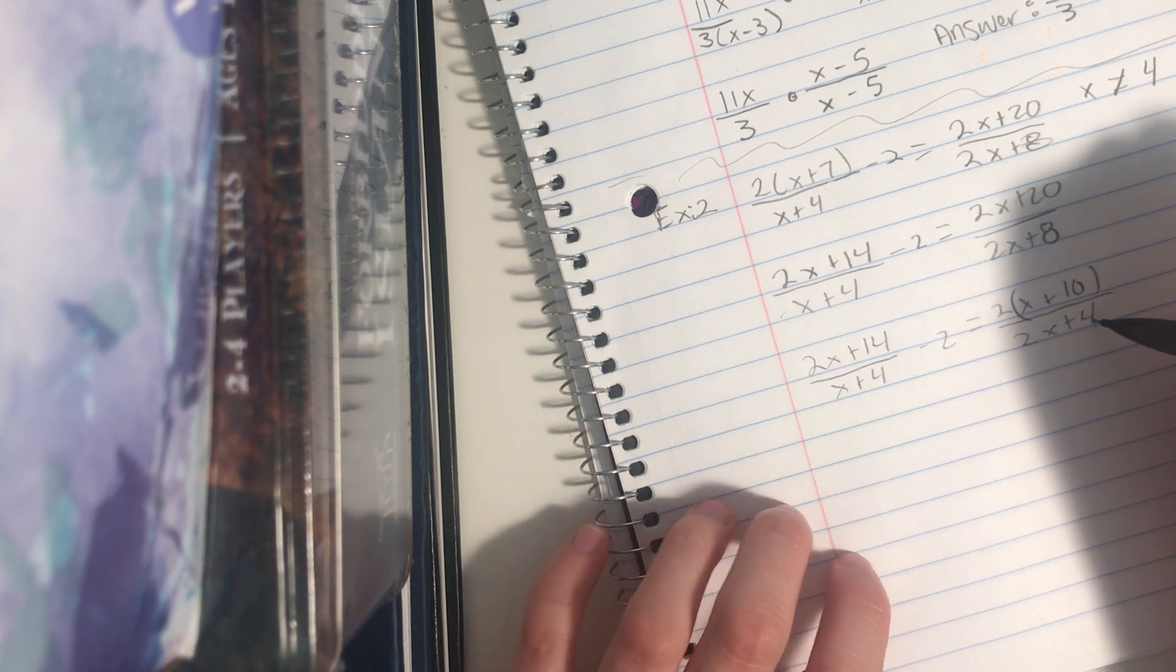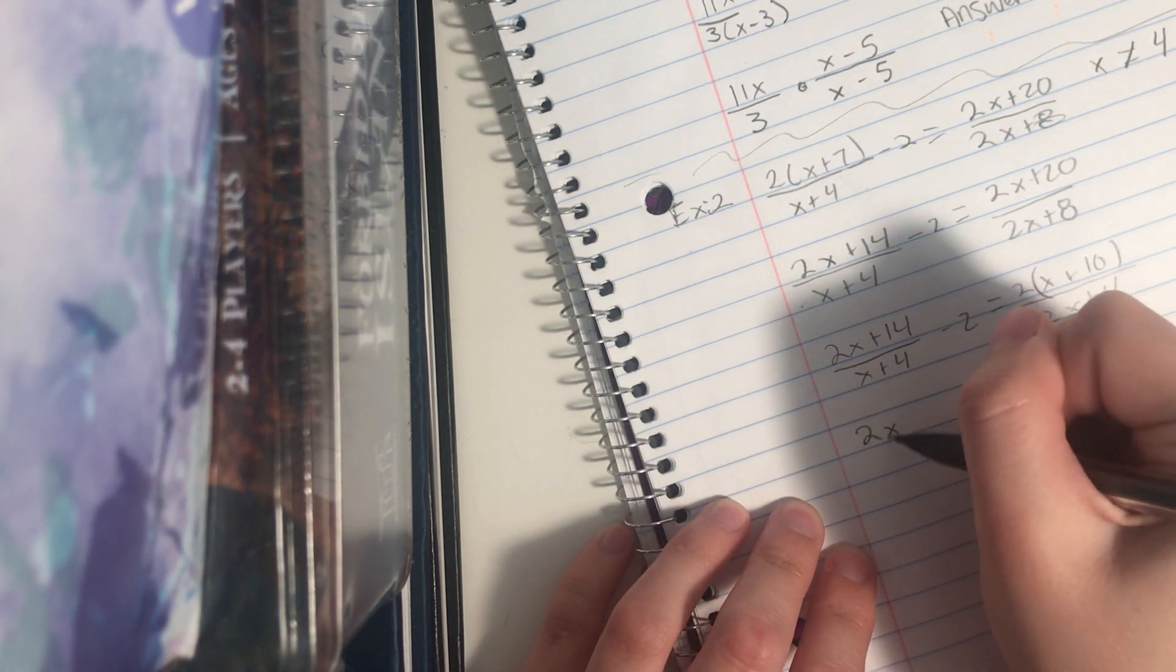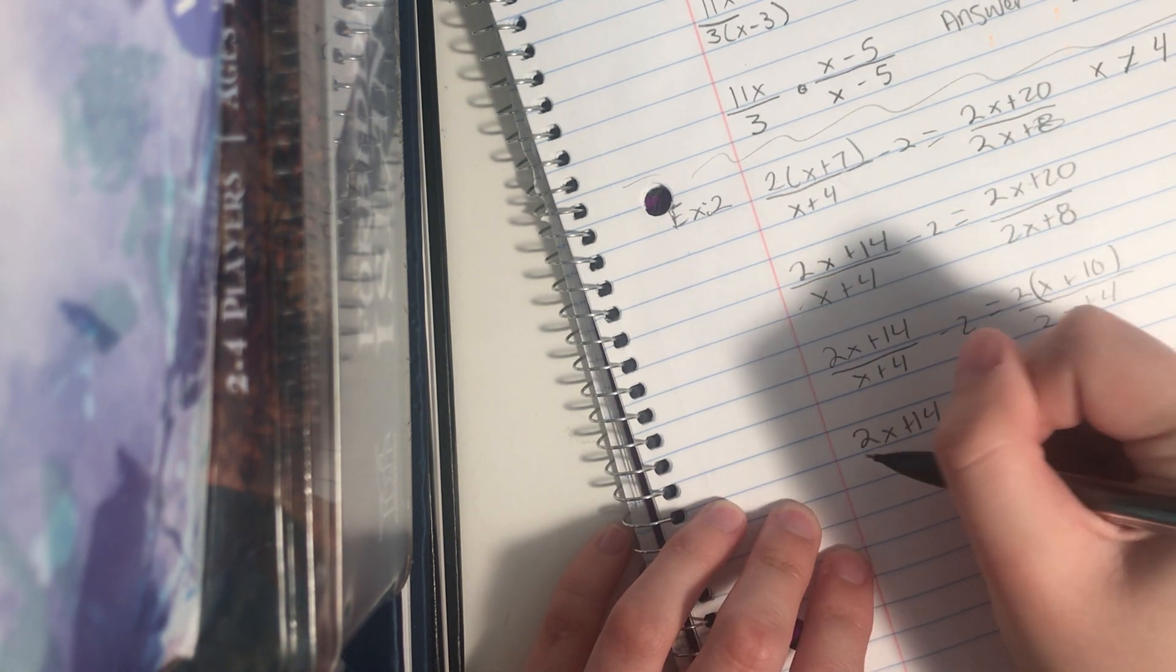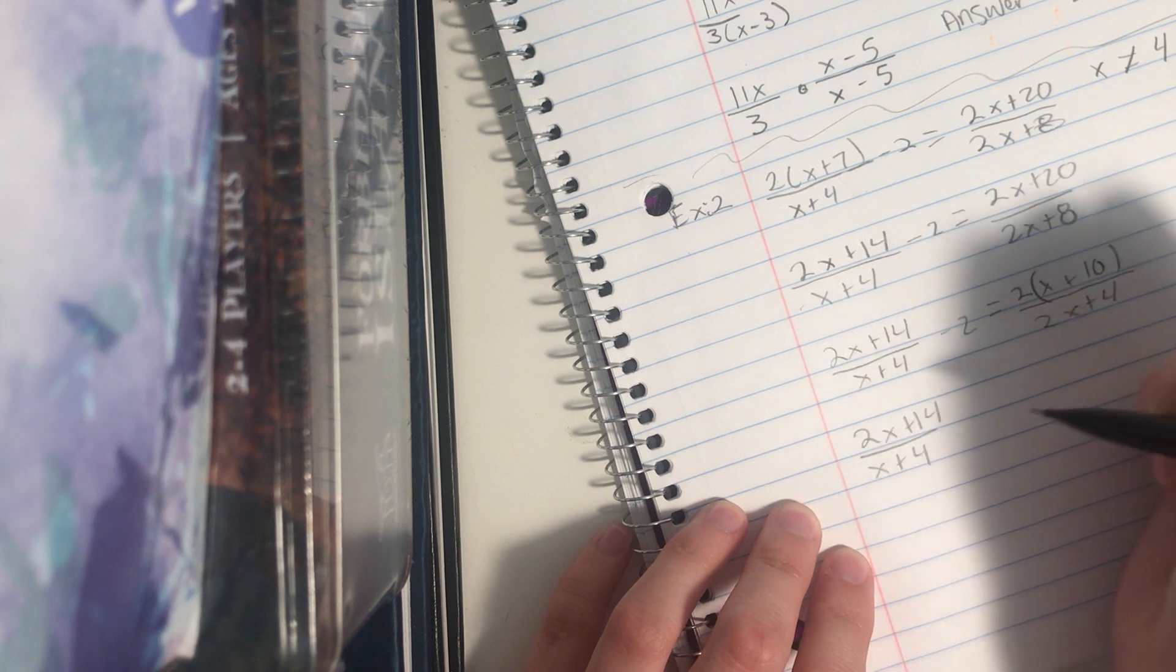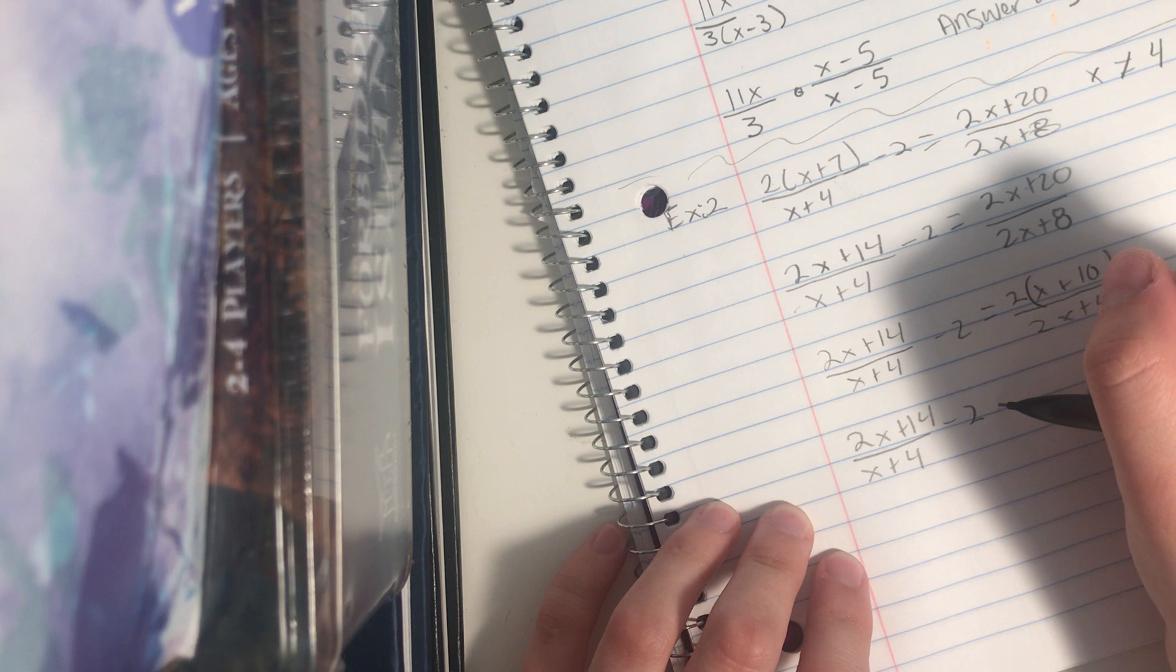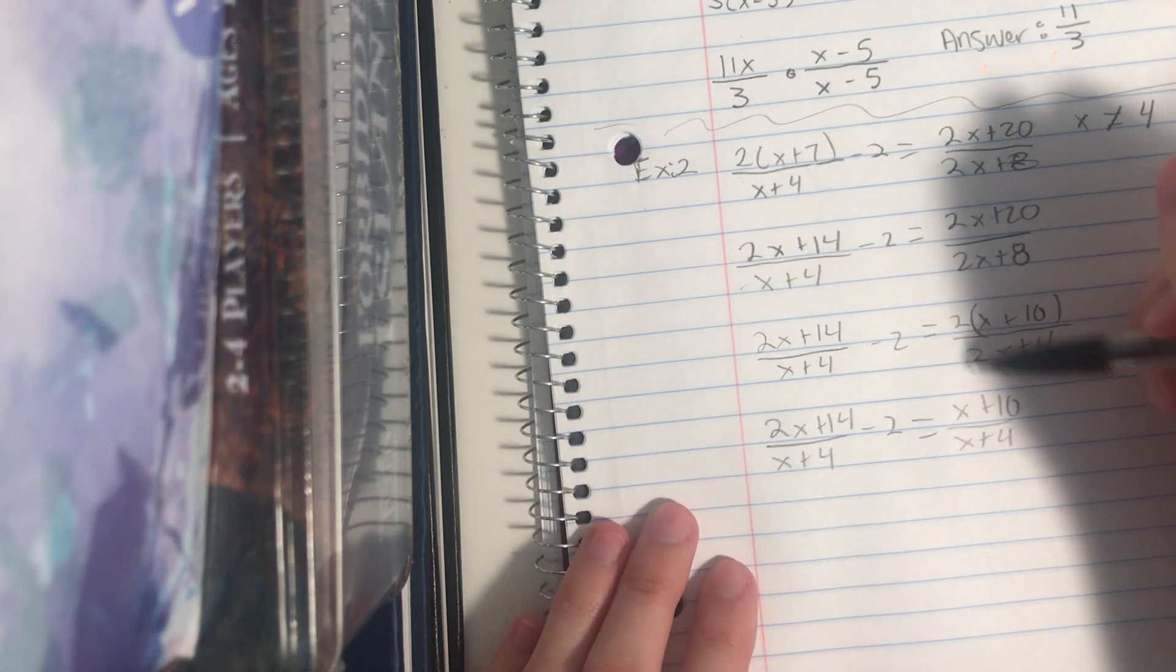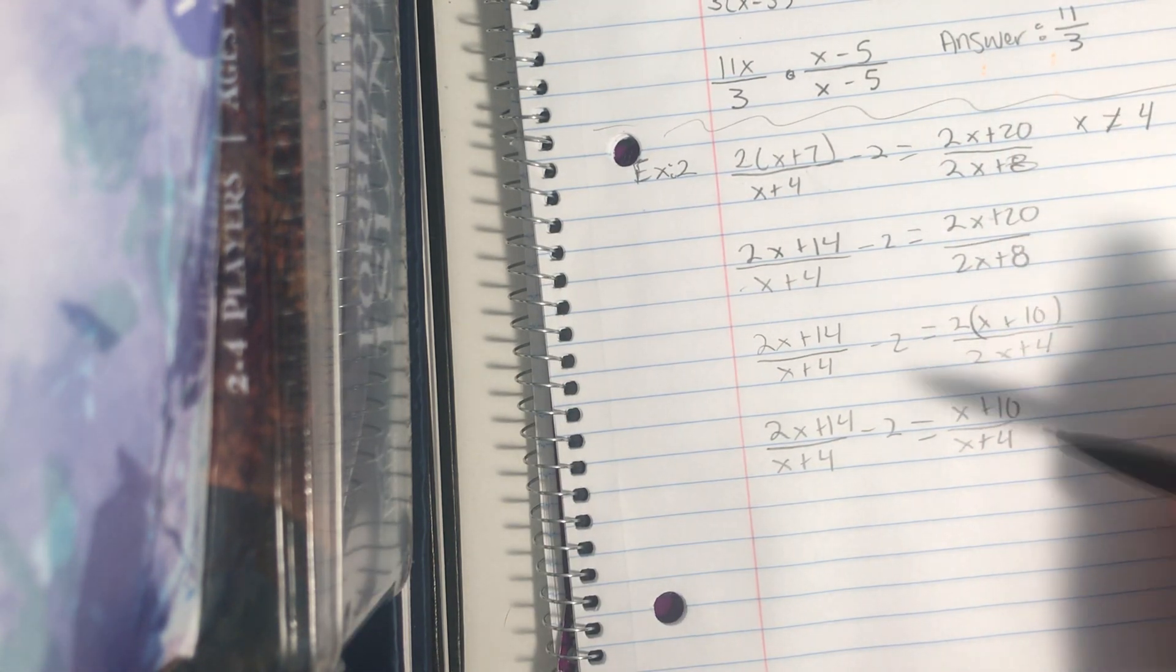I want to reduce by 2, bringing this to 2x plus 14 over x plus 4 minus 2. I reduce by 2 on this half of the problem, which equals x plus 10 over x plus 4. I reduce by 2 because these were common factors.